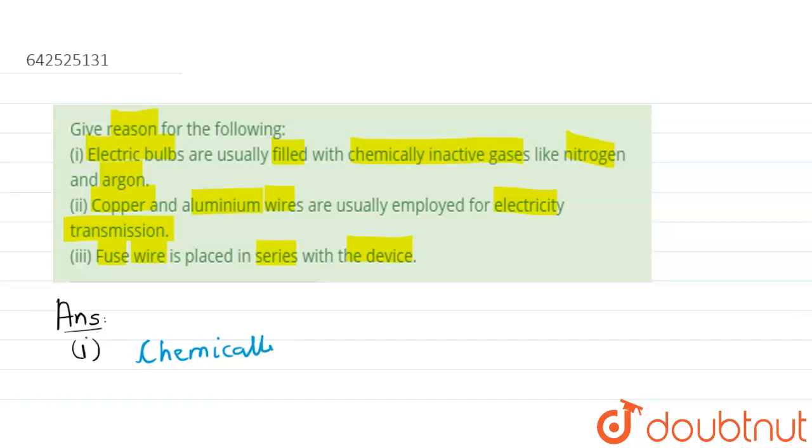Chemically inactive gases - they do not react with tungsten, which is W, which is heated up, which is usually heated in the bulb.